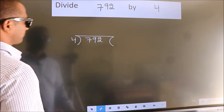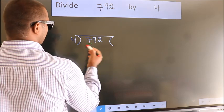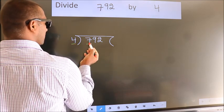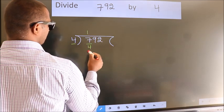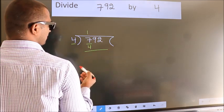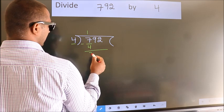Next. Here we have 7, here 4. A number close to 7 in 4 table is 4 once 4. Now we should subtract. We get 3.